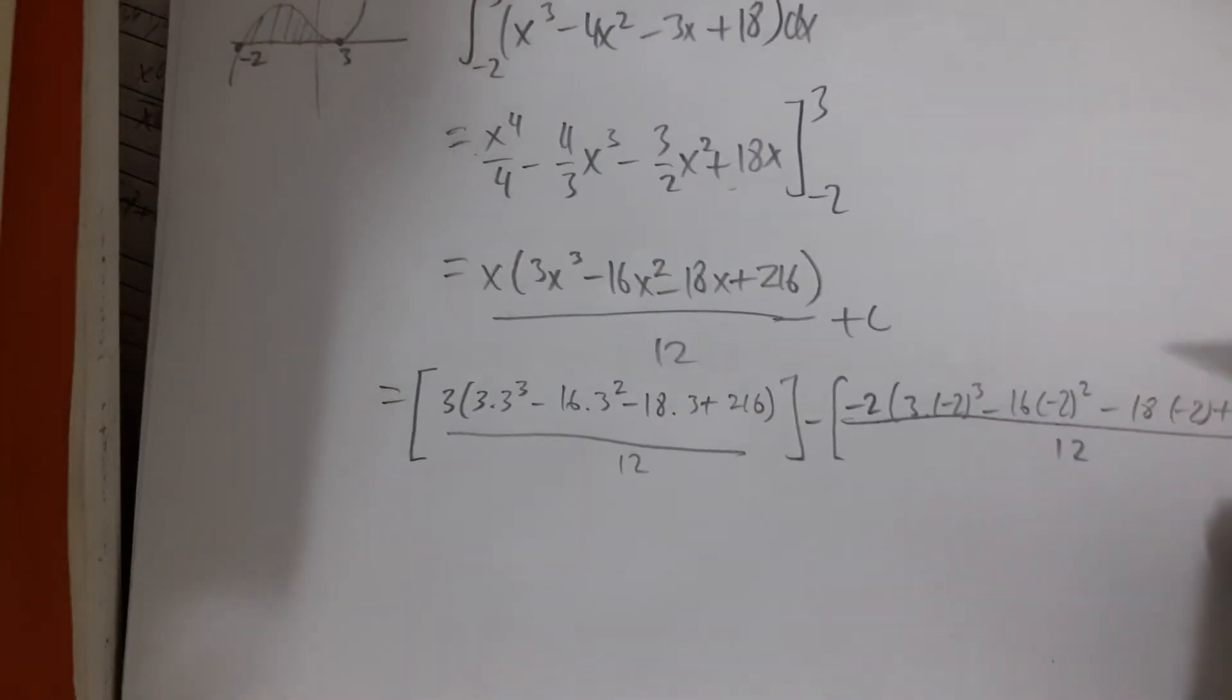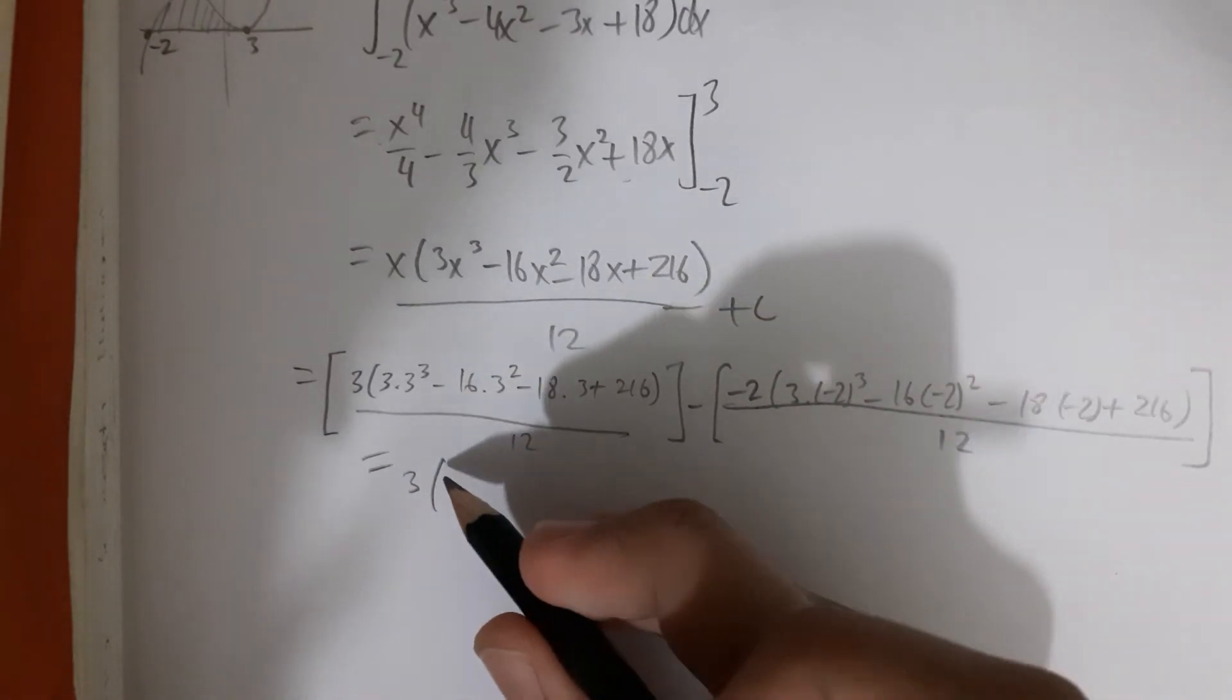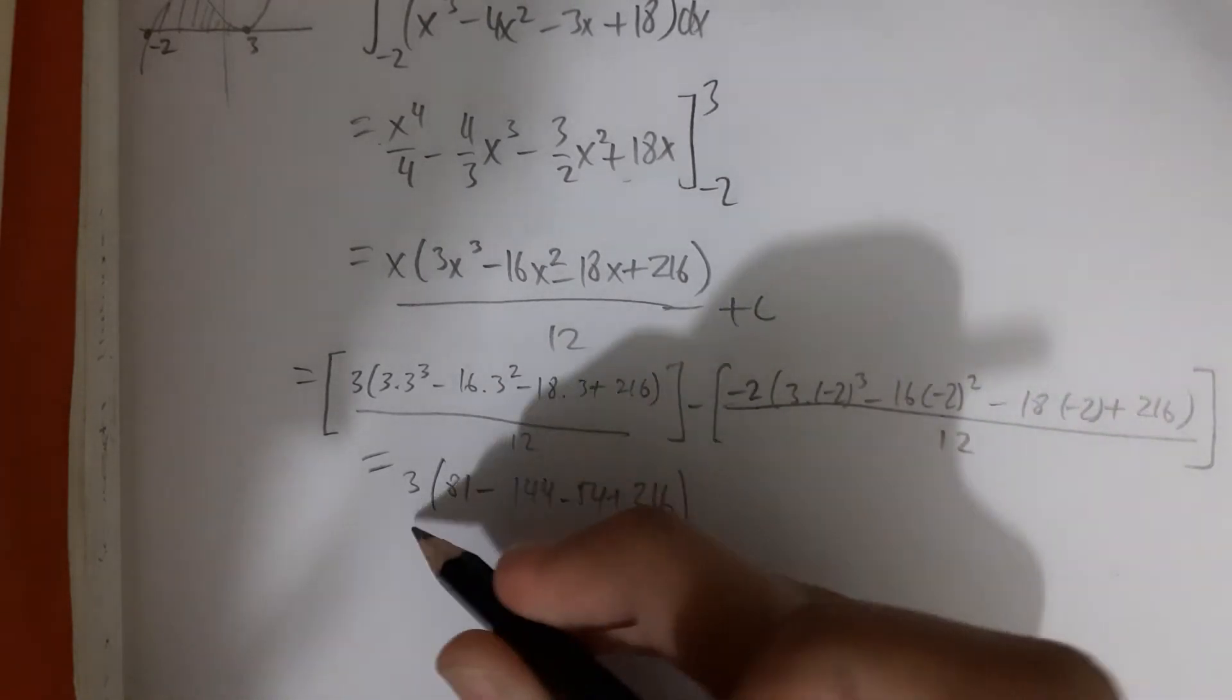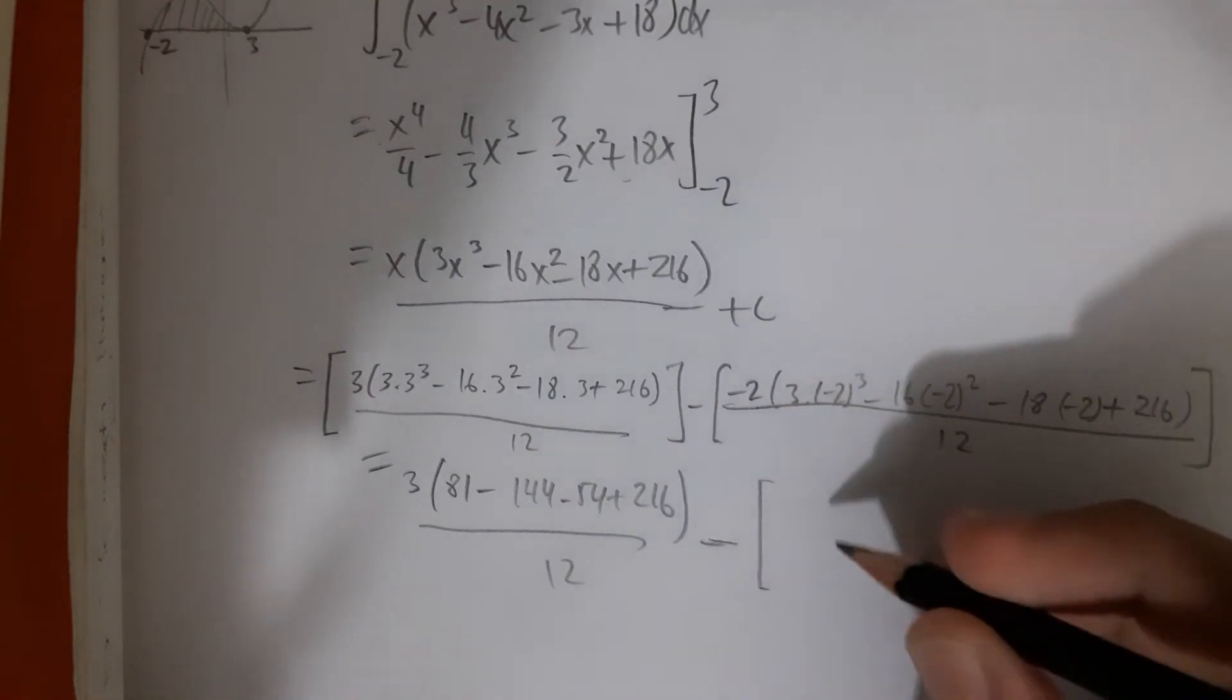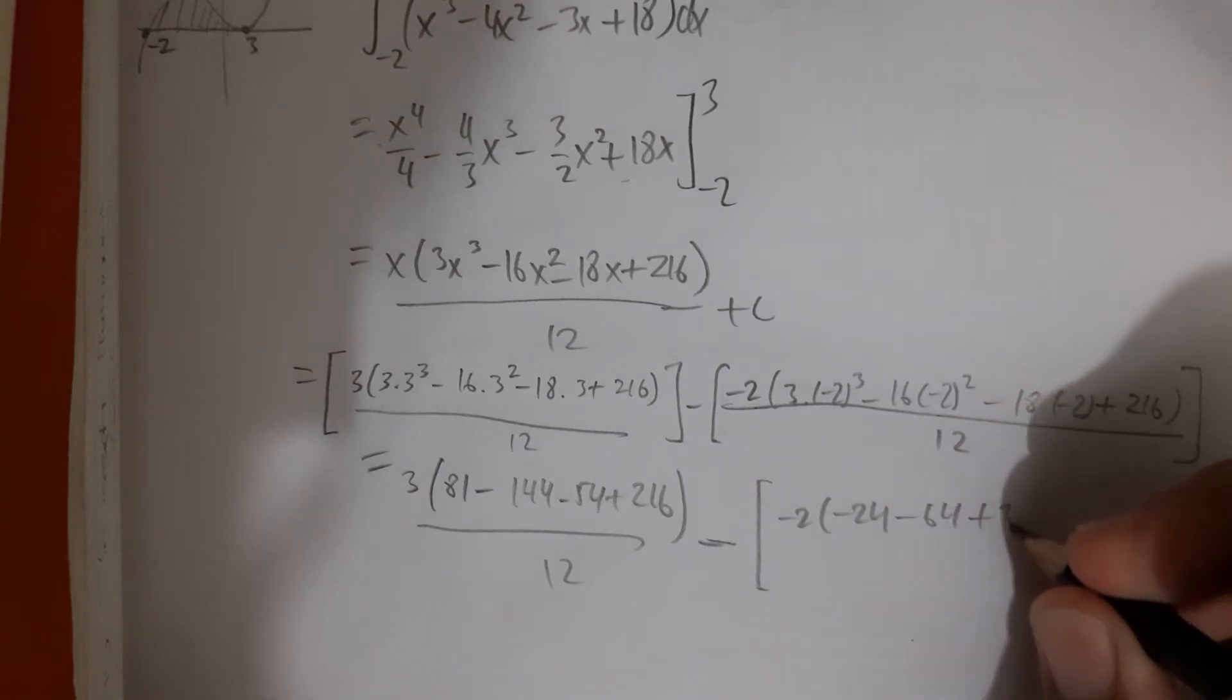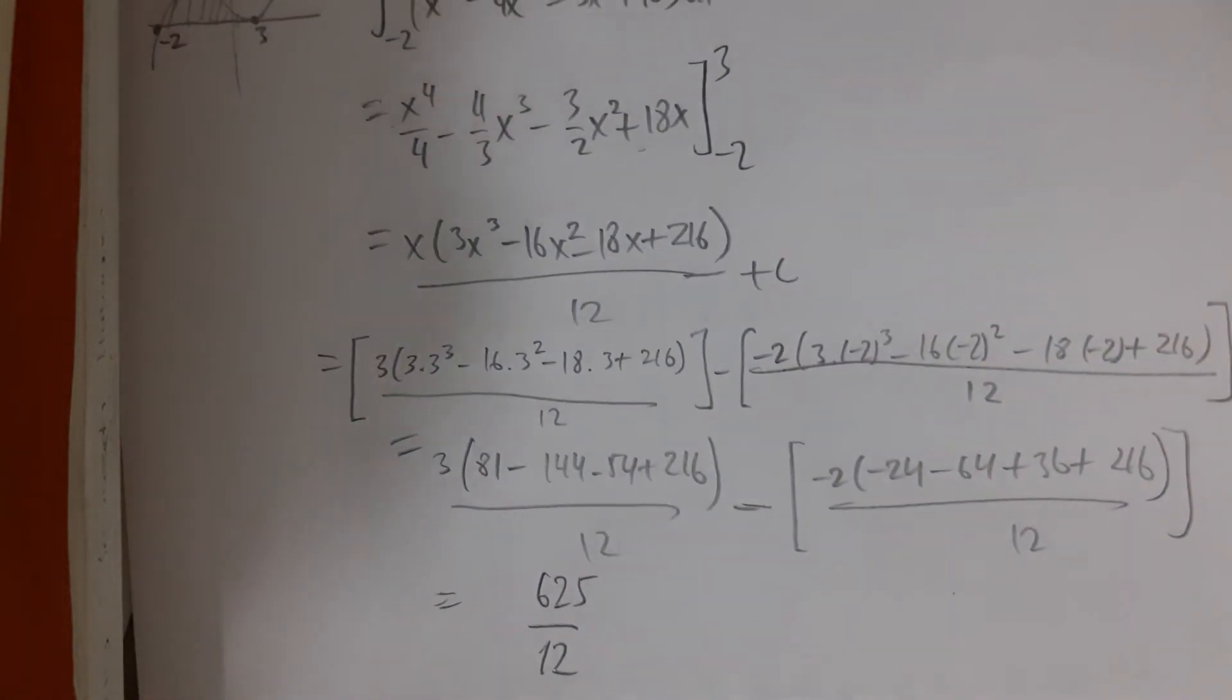Then, without further ado, it's a very long calculation but I'll show one more step. So 81 minus 16 times 9, which is 144, minus 54 plus 216 minus, let me see, minus 2 times [minus 8 minus 24 minus 16 times 4, which is minus 64, plus 36 plus 216] over 12. And this is equal to 625 over 12.